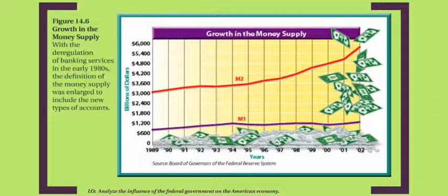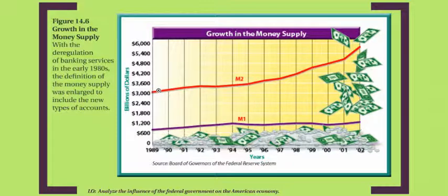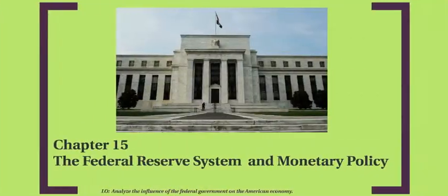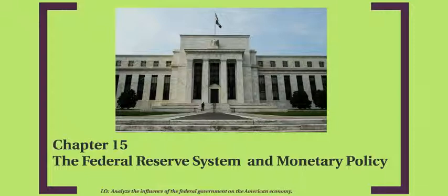Looking at the growth of the money supply: under the M1 definition — just currency and money in checking accounts or checkable deposits — it has stayed more or less constant with not a lot of fluctuation. But under the M2 definition, which is broader, the money supply has grown much more rapidly, particularly from about 1995 onward. It was pretty level from 1989 to 1995, then began to pick up steadily, and picked up even more sharply in 2001 to 2002.